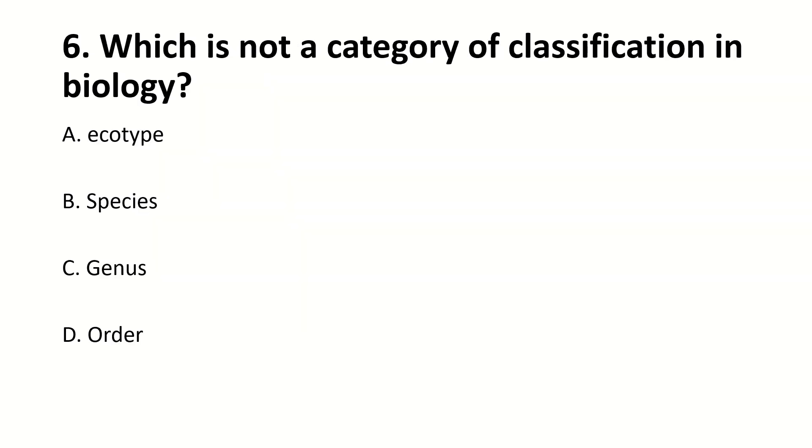Which is not a category of classification in biology? The right answer is A: ecotype.